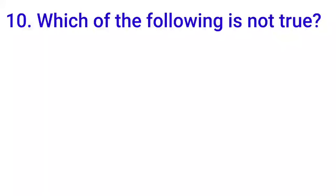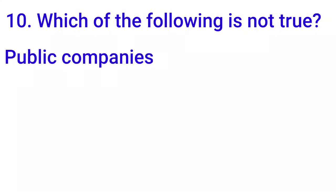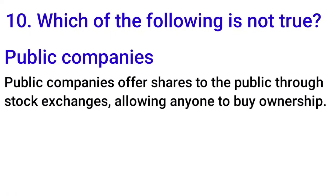Next MCQ: 'Which of the following is not true?' — about public and private companies. Public companies are those where the public can invest — they can buy shares and become shareholders. For example, Tata is a public limited company; anyone can buy its shares. Private companies like Deloitte, Capgemini, Rapido do not allow public investment.